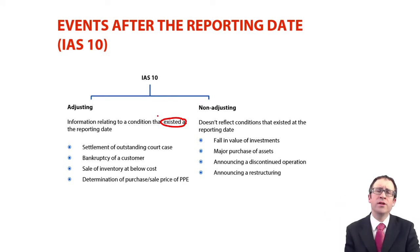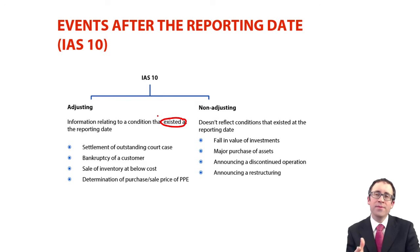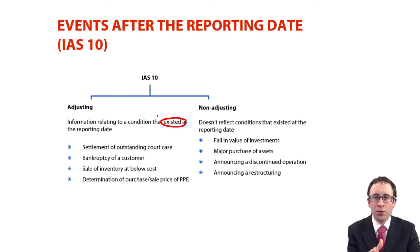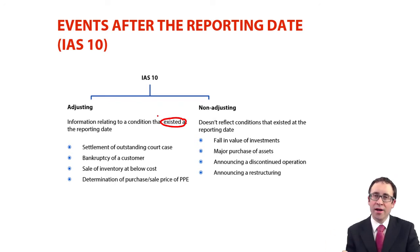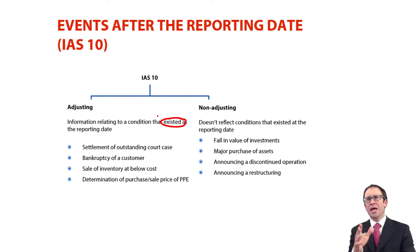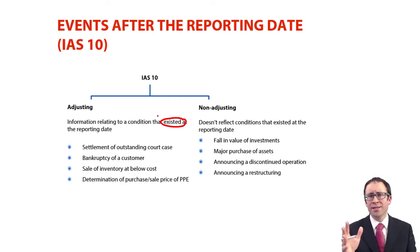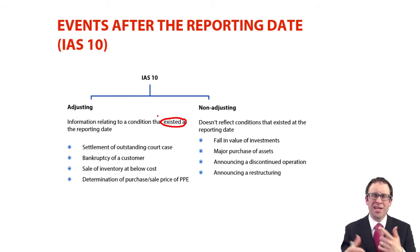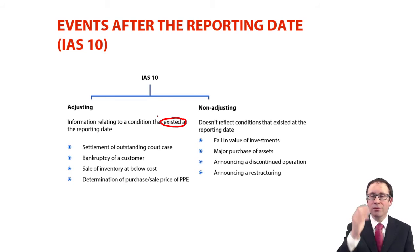We've just looked at provisions in the previous chapter. A common scenario for a provision is a legal case. Maybe at the end of the year it was only possible, but subsequent to the reporting date you've now realised that you're going to lose that case — therefore it is now probable, and that court case will be provided for. Likewise with the bankruptcy of a customer: the standard takes the view that even though the customer hadn't gone bankrupt at the reporting date, they will have been sufficiently bankrupt at that date anyway, because businesses don't tend to go bankrupt overnight. So we will adjust our receivable balances by effectively writing them off.